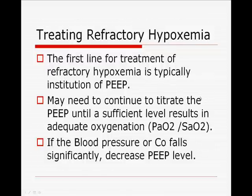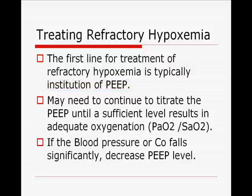Treating refractory hypoxemia: the first line of treatment is typically the institution of PEEP. When we say refractory hypoxemia, we're already assuming that we're providing oxygen and the PaO2 response is refractory to that oxygen therapy. We may need to continue titrating PEEP — 5, 10, 12, even 15 of PEEP — until a sufficient level results in adequate oxygenation. However, if blood pressure or cardiac output falls significantly, we'll need to consider decreasing the PEEP level. Rather than increasing FiO2, we increase PEEP to a certain level unless hemodynamics deteriorate.